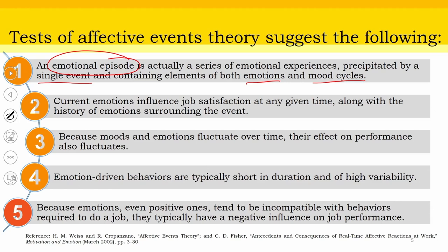The second tenet is that current emotions influence job satisfaction at any given time, along with the history of emotions surrounding the event. Current emotion is not a standalone event — it is impacted by the history of emotions surrounding the event. Because moods and emotions fluctuate over time, the effect on performance also fluctuates. Moods are not consistent and do not carry on for a large period of time. Moods and emotions are essentially fluctuating, their effect on performance fluctuates, and they keep on changing in tone and tenor.